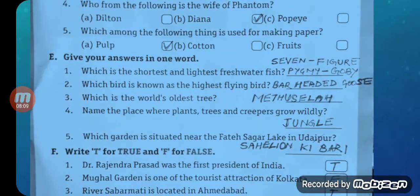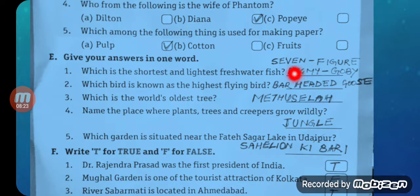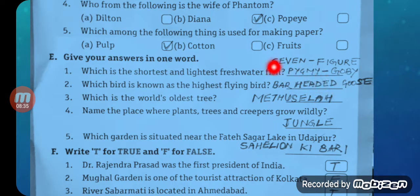Now, Give the Answer in One Word — Part E. Question one: Which is the shortest and lightest freshwater fish? The answer is the Severn Pygmy Goby — S-E-V-E-N F-I-G-U-R-E P-Y-G-M-Y G-O-B-Y. Question two: Which bird is known as the highest flying bird? The answer is Bar-headed Goose — B-A-R H-E-A-D-E-D G-O-O-S-E.